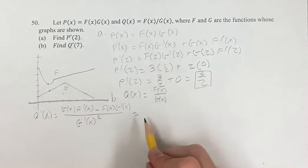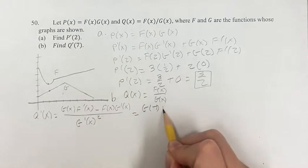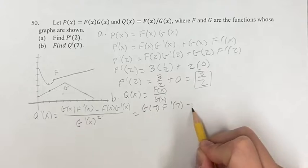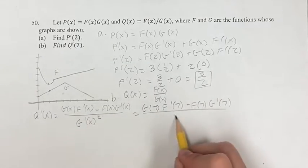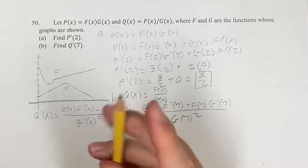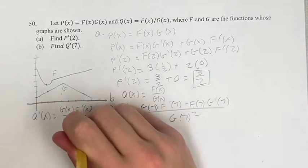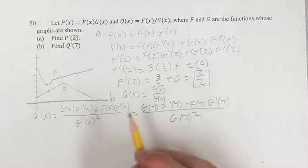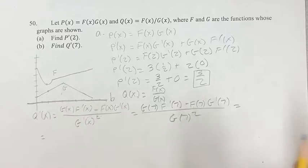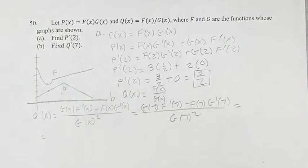Plugging in 7 here, we have G(7) times F prime of 7 minus F(7) times G prime of 7 over G(7) squared. To clarify, this is not the derivative of G, it's just G(x) squared. Now, just find the points on the graph and plug them in.